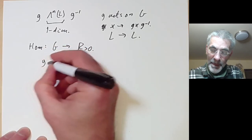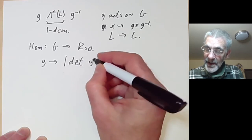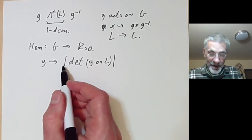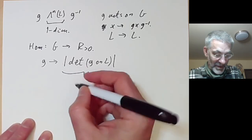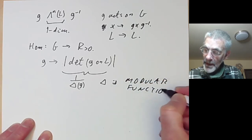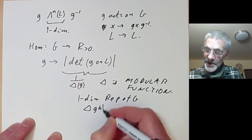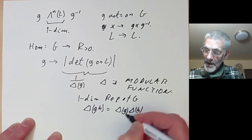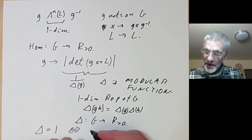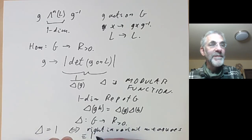So we've got this map from G to the positive reals, which gives the absolute value of the determinant of the adjoint action of G on the Lie algebra L at the identity. This is more or less the modular function — or at least it's one over delta of G, where delta is the so-called modular function. The modular function is a one-dimensional representation of G, meaning delta(gh) = delta(g)·delta(h), and it maps G to the positive reals. Delta is identically one if and only if right invariant measures are the same as left invariant measures.